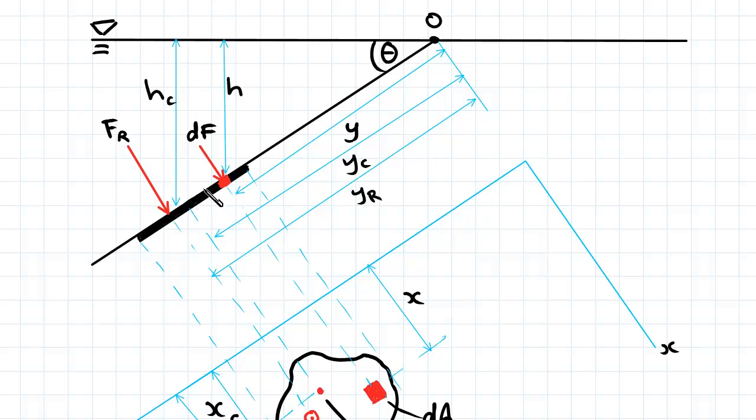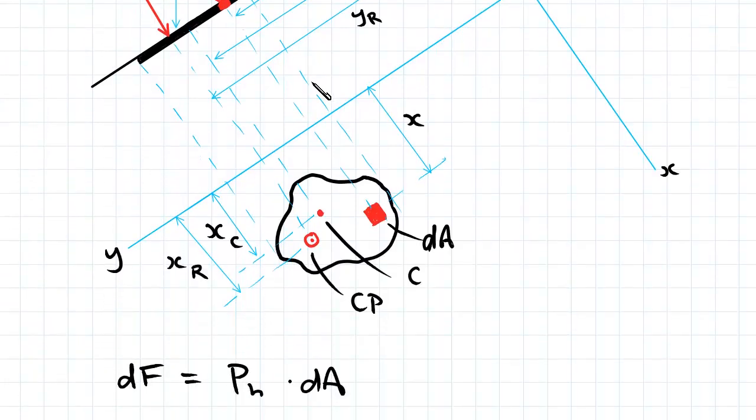So it's the elevation view, and this is the plan view of the surface that we're considering. There's our dA, our centroid, and our center of pressure.